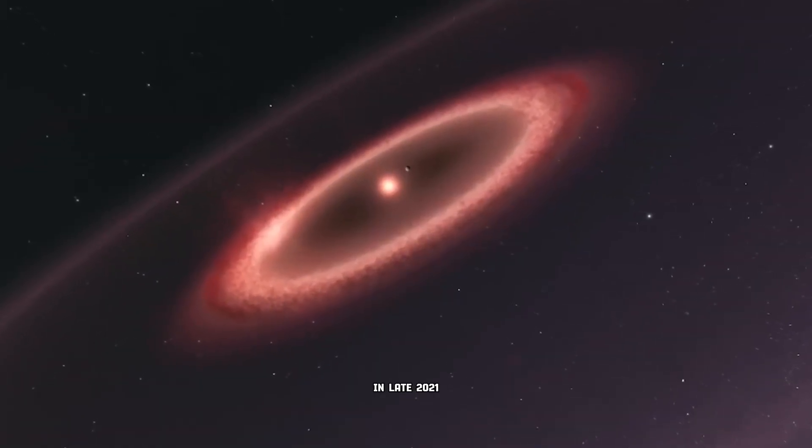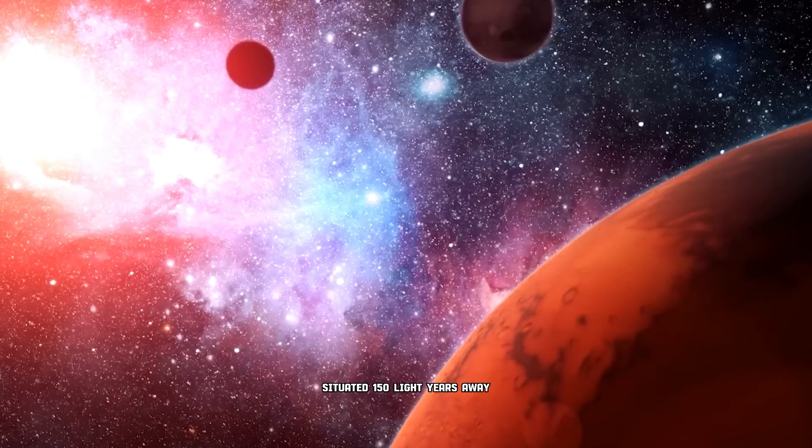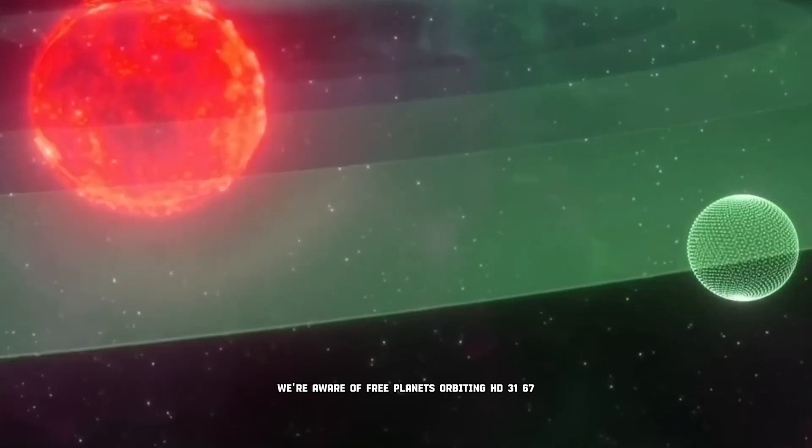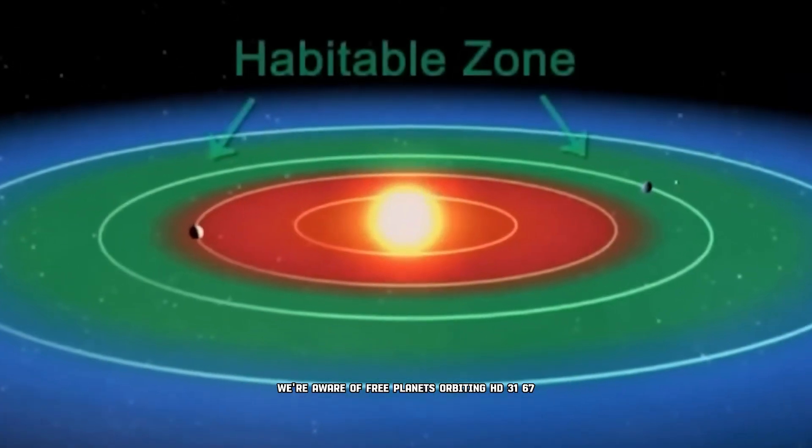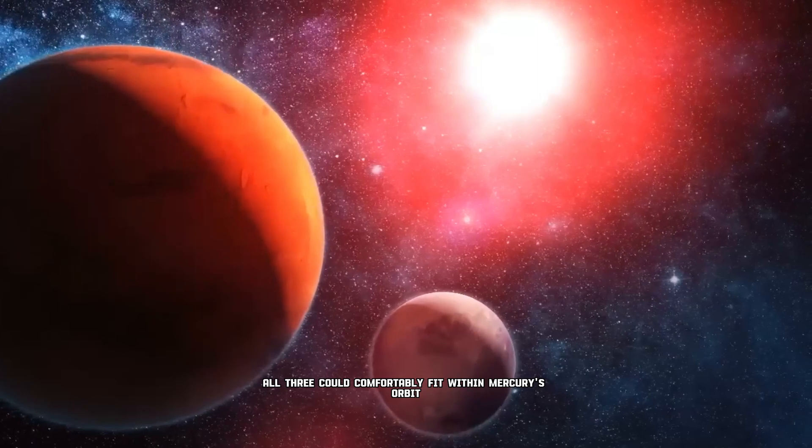In late 2021, astronomers and physicists released a report describing a system situated 150 light-years away in the Pisces constellation. We're aware of three planets orbiting HD 3167. The oddity isn't their number, but rather their size. All three could comfortably fit within Mercury's orbit.